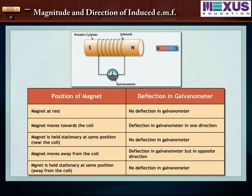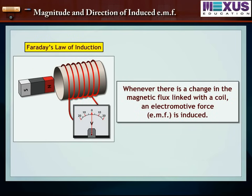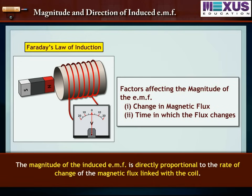Based on his experiment, Faraday formulated two laws of electromagnetic induction. Whenever there is a change in the magnetic flux linked with the coil, an electromotive force is induced. The magnitude of the induced EMF is directly proportional to the rate of change of the magnetic flux linked with the coil.